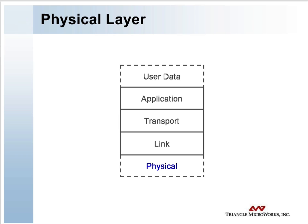The physical layer is primarily concerned with the physical media over which the protocol is being communicated. For example, it handles the state of the media, clear or busy, and synchronization across the media, starting and stopping. Most commonly, DNP is specified over a simple serial physical layer, such as RS-232 or RS-485, using physical media such as copper, fiber, radio, or satellite. More recent applications have implemented DNP-3 over an Ethernet connection.